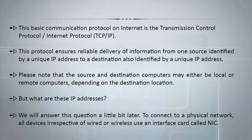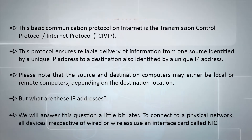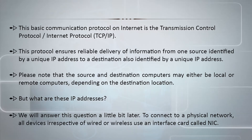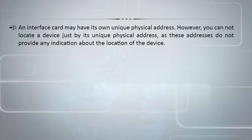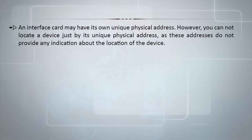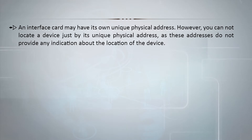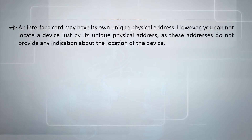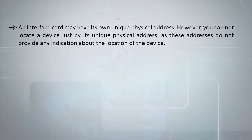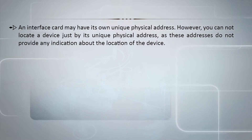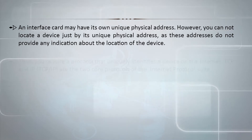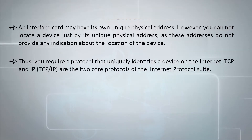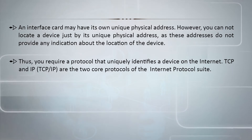To connect to a physical network, all devices — irrespective of whether they use wired or wireless connections — use an interface card called a NIC, which stands for Network Interface Card. A NIC may have its own unique physical address. However, you cannot locate a device just by its unique physical address, as these addresses do not provide any indication about the location of the device. Thus, you require a protocol that uniquely identifies a device on the internet.